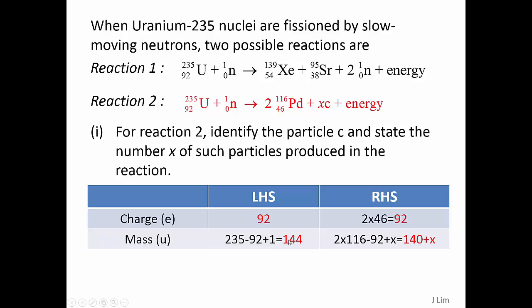Now the mass on the left-hand side is 144 in terms of atomic mass unit and 140 plus x on the right-hand side, therefore x must be 4 and C is a neutron.